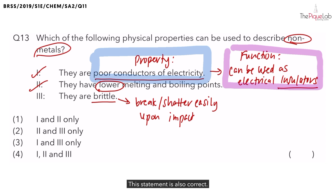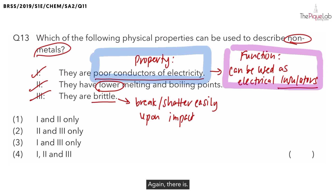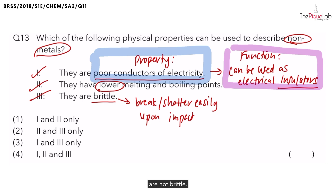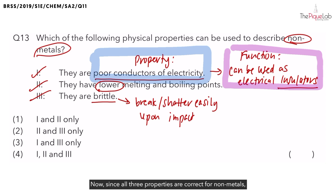This statement is also correct. Are there any exceptions? Yes, there are. Non-metals made of cloth fibres or wood fibres are not brittle. Since all three properties are correct for non-metals, the answer would be option four.